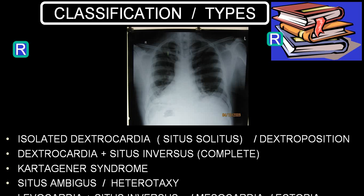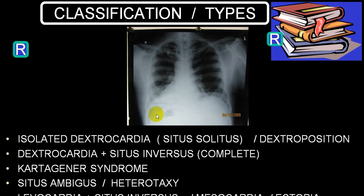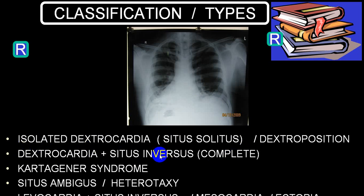You can classify using the word isolated dextrocardia, meaning there is only malrotation of the heart but the viscera — abdominal viscera — is not rotated. Then we use the term isolated dextrocardia with situs solitus. When the abdominal viscera is also rotated, we call it situs inversus, and then we use the term complete dextrocardia — dextrocardia with situs inversus.